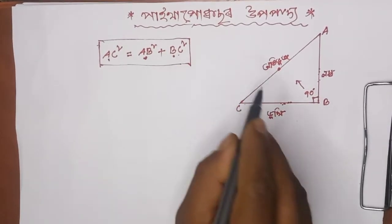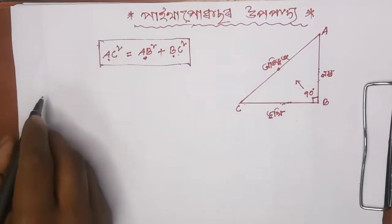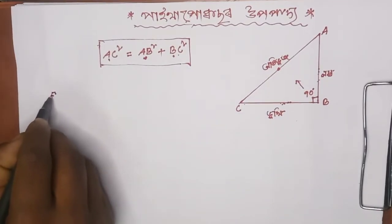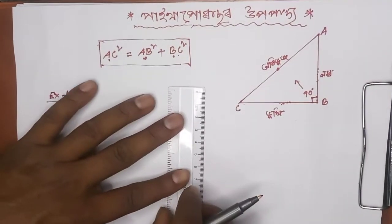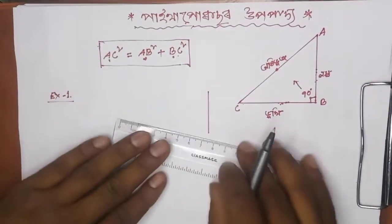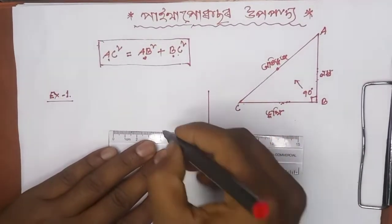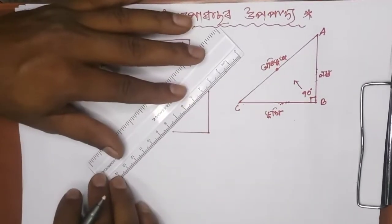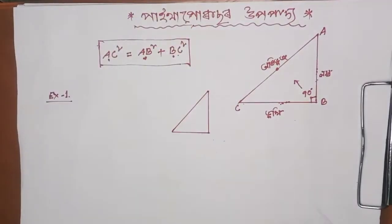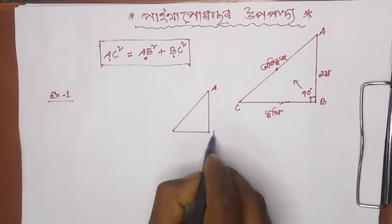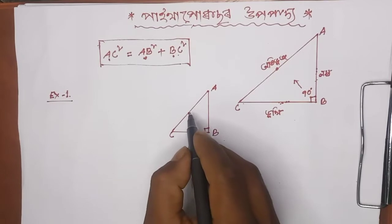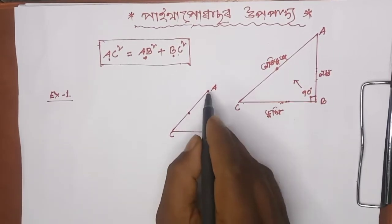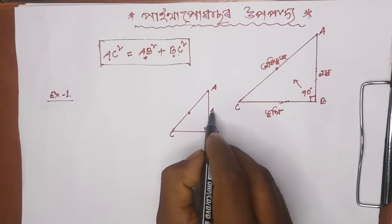Let's look at this first example. A, B, C. This is 90 degrees. 90 degrees are opposite. If I have 80 degrees, I will have 80 degrees. AB and BC are 90 degrees. I have 80 degrees. This is 4 centimeters.